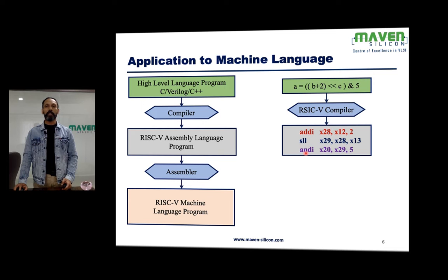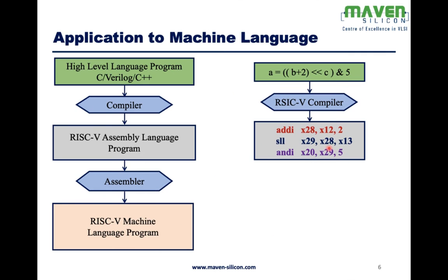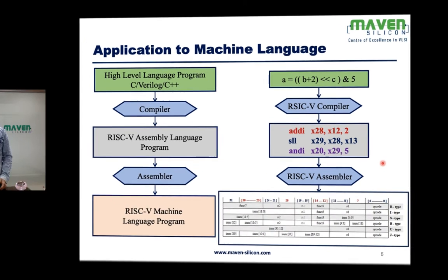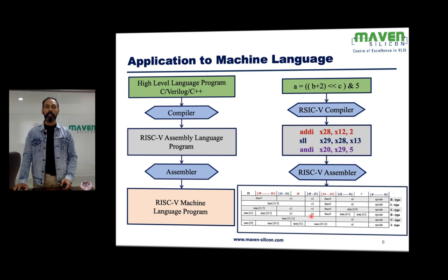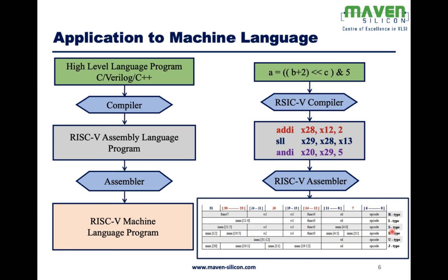The instructions are: ADDI, shift left logical (SLL), and ANDI. This is how the assembly program would look like, and then the assembler converts this assembly language into machine language. To convert this into machine language it follows the RISC-V ISA. RISC-V ISA defines the format of the instruction — there could be different formats like R, I, S, B, U, and J. Here, ADDI falls under I-type (immediate type) instruction, SLL shift left logical falls under R-type instruction, and ANDI falls under I-type.